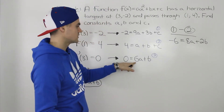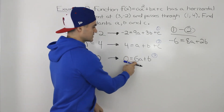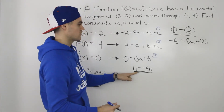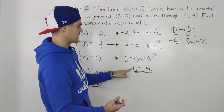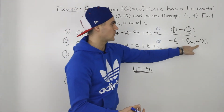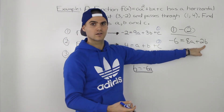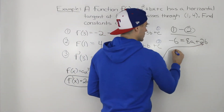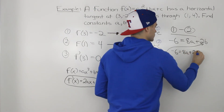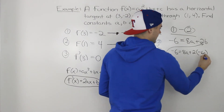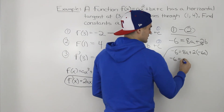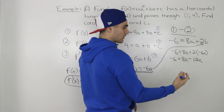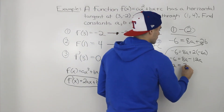Also notice that in equation 3 it's easy to isolate for b. Since 0 equals 6a plus b, we know that b equals negative 6a. Now we can substitute this into our simplified equation: negative 6 equals 8a plus 2 times negative 6a. That gives negative 6 equals 8a minus 12a, which is negative 4a. Dividing both sides by negative 4, we get a equals 3 over 2.